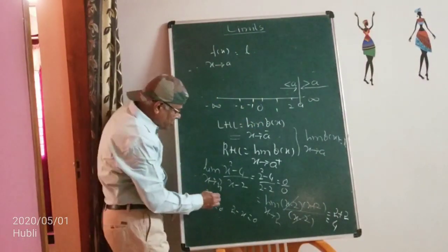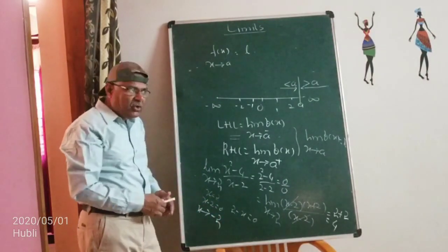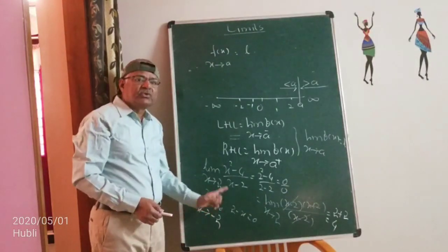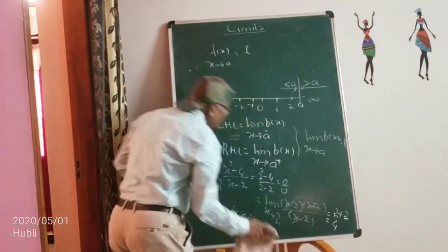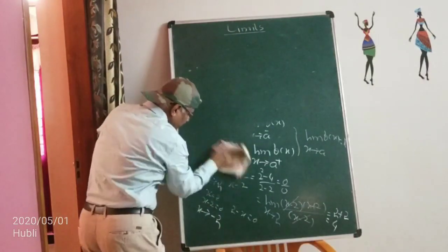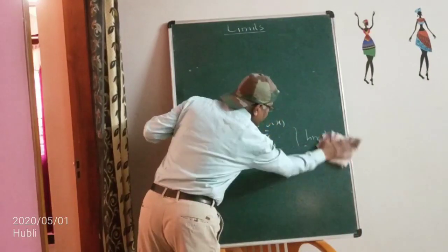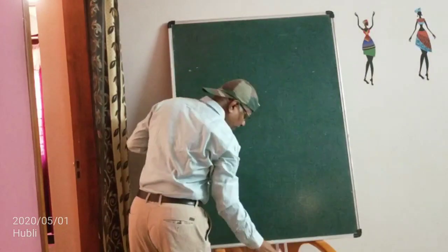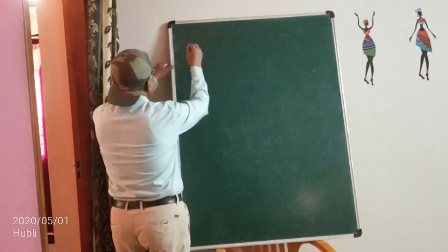Now a question: suppose x tends to −2. If x tends to −2, what is the indeterminate factor? x + 2 will be the indeterminate factor. So eliminate x + 2. Care has to be taken: first check the denominator; if it tends to 0, the indeterminate factor must be in both numerator and denominator — eliminate it, then calculate the limit.